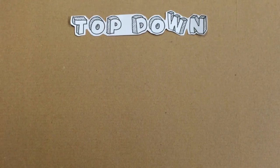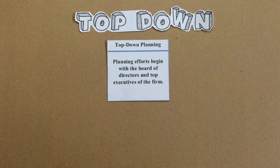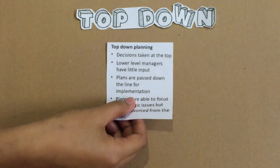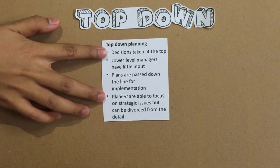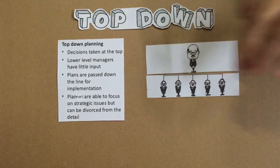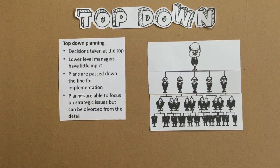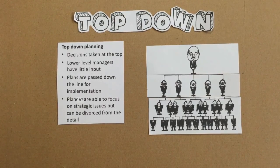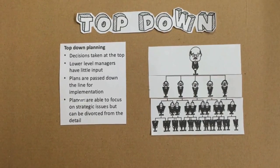Now we go into the details of top-down management. Top-down planning efforts begin with the board of directors and top executives of the firm. Decisions are taken at the top of management, and lower-level managers have little or no input. Plans are passed down to the line for implementation. Planners are able to focus on strategic issues but can be divorced from the details, as they only come up with the idea and not the implementation — the people at the lower levels handle implementation.